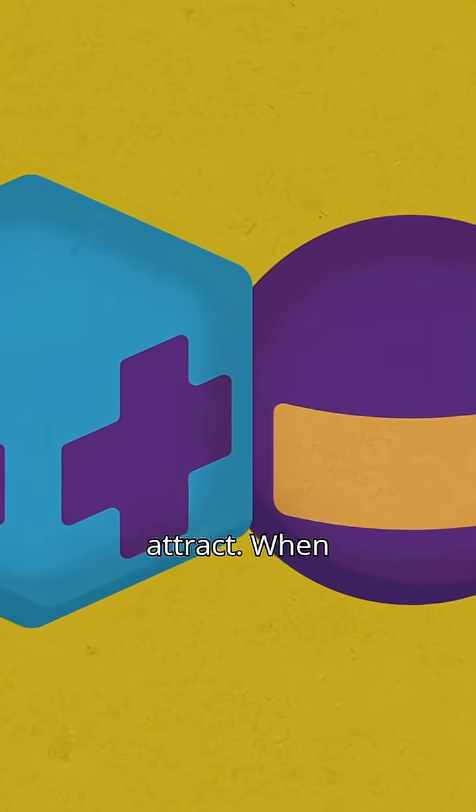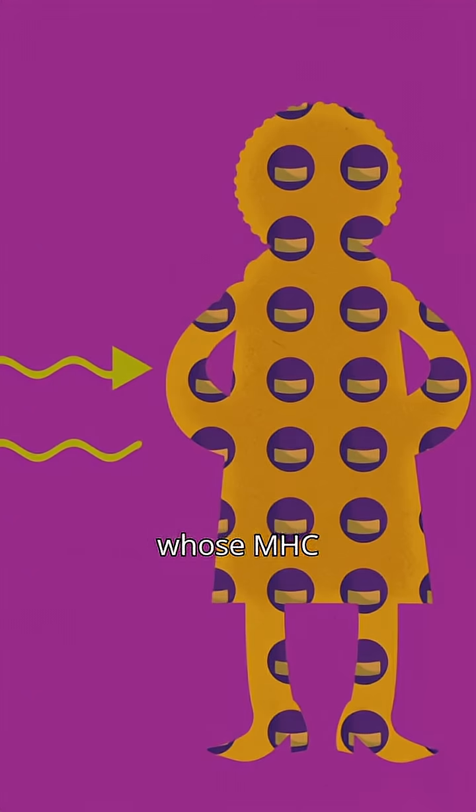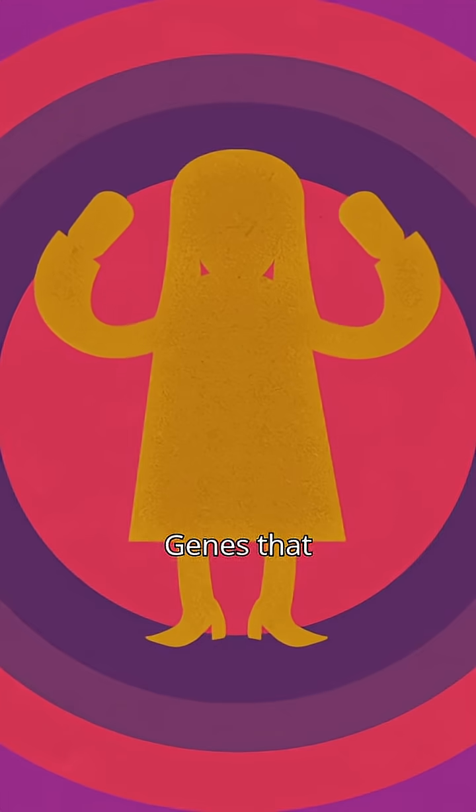In this case, opposites attract. When a study asked women to smell t-shirts that had been worn by different men, they preferred the odors of those whose MHC molecules differed from theirs. This makes sense. Genes that result in a greater variety of immunities may give offspring a major survival advantage.